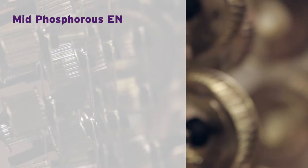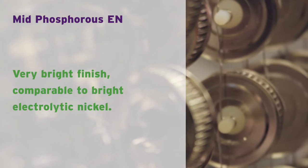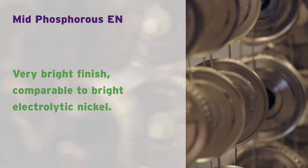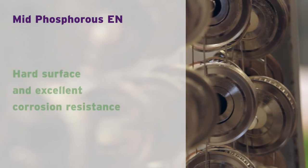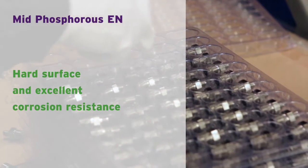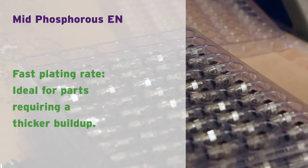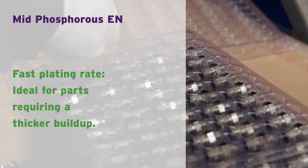Our mid-phosphorus is our most common electroless nickel finish. Aesthetically it is very bright, with a brilliance comparable to bright electrolytic nickel. With a harder surface than our high phosphorus finish, our mid-phosphorus retains excellent corrosion resistance. It also has a fast plating rate, making it an ideal finish for parts requiring a thicker build-up.